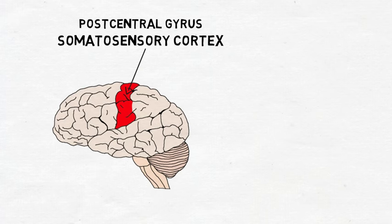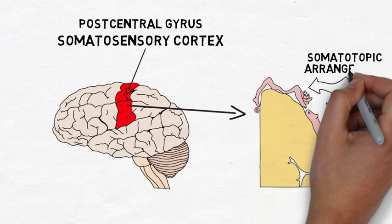Specific parts of the somatosensory cortex receive signals from specific parts of the body, an arrangement that is known as somatotopic. Information about the nature and location of the sensation are integrated in the somatosensory cortex, where the conscious perception of the sensation begins.